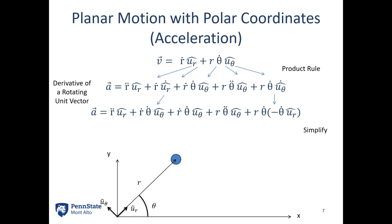Simplifying — collecting all pieces in front of ur together and all pieces in front of u-theta together — the acceleration vector in polar coordinates is: (r-double-dot minus r·theta-dot²) in the ur direction, and (r·theta-double-dot plus 2·r-dot·theta-dot) in the u-theta direction. Two of these pieces have common names: the negative r·theta-dot² term is called centrifugal acceleration, and the 2·r-dot·theta-dot term is called Coriolis acceleration.